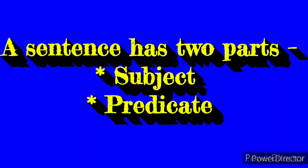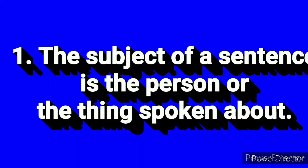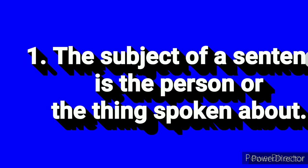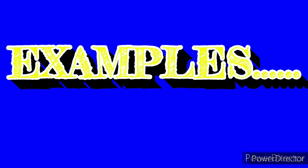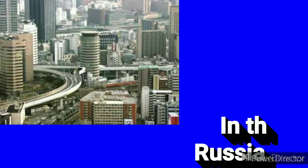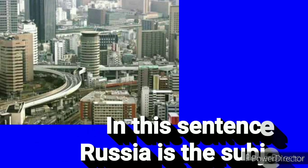Let us move forward and know about the subject. The subject of a sentence is the person or the thing spoken about. For example: 'Russia is a big country.' In this sentence, Russia is the subject, because Russia is the person or thing being spoken about.